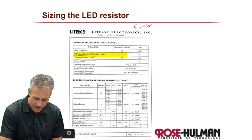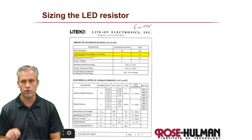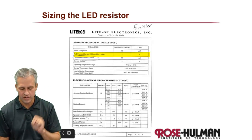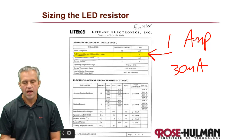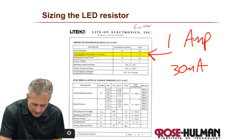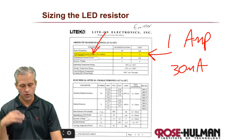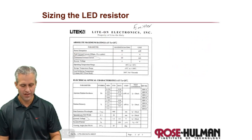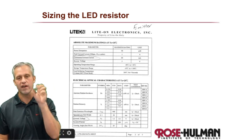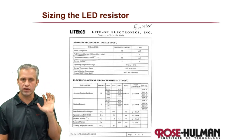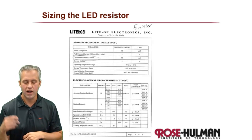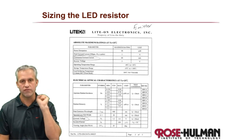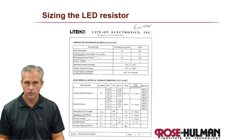One really neat thing on the datasheet is the peak forward current — if you're just going to flash it briefly, this number is one amp, which is a lot more than 30 mA. To use it at one amp you have to keep it on at most about 1/300th of the time. So if you flash it for one millisecond and leave it off for 300 milliseconds, you can run it super bright. That's a trick for your projects: flash it on for a millisecond to get really high brightness.